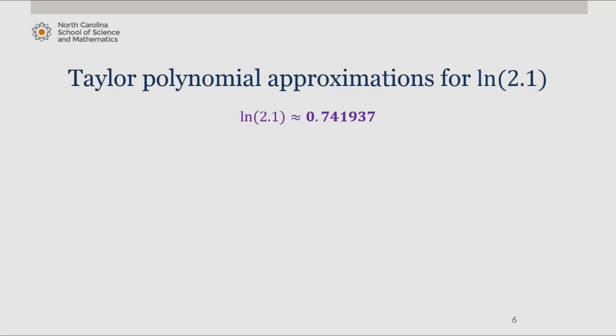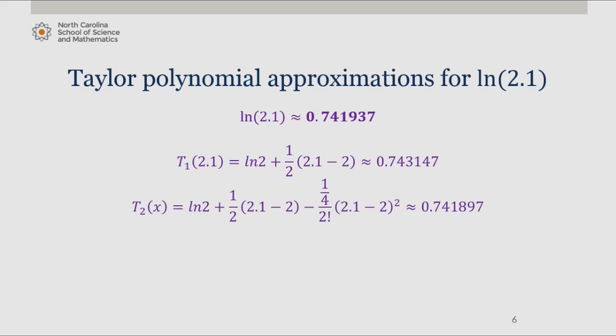Natural log of 2.1 is approximately 0.741937. The first degree Taylor polynomial at 2.1 is equal to 0.743147. The second degree Taylor polynomial is 0.741897. And the third degree Taylor polynomial is 0.741939.